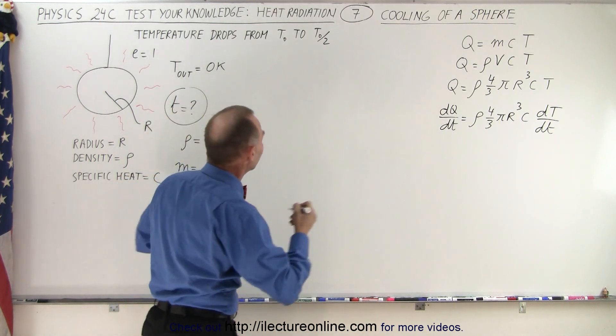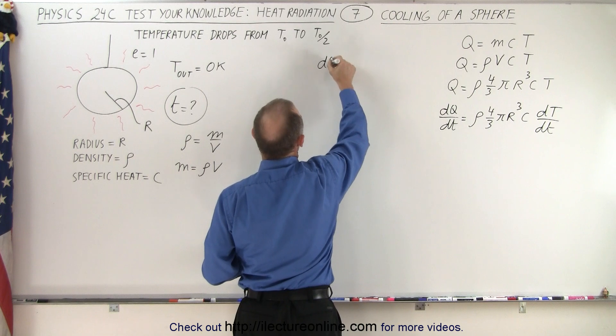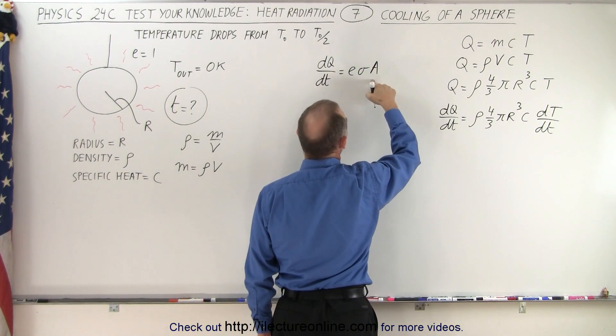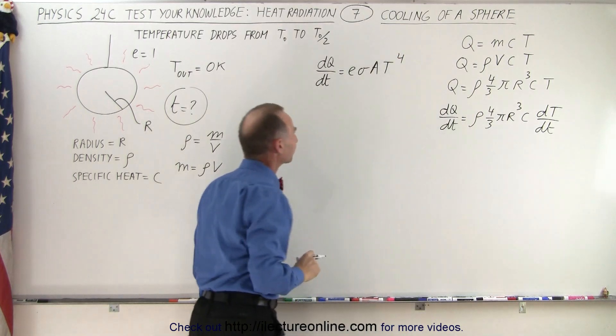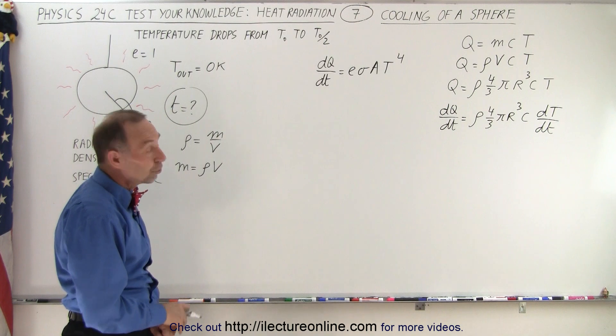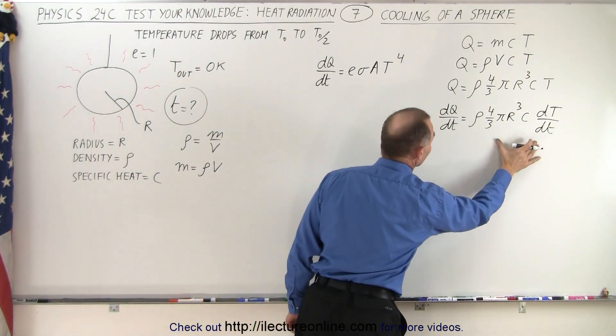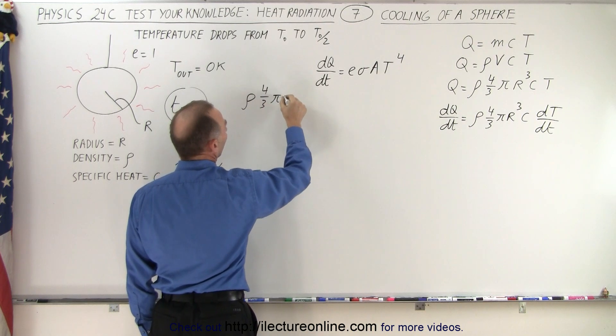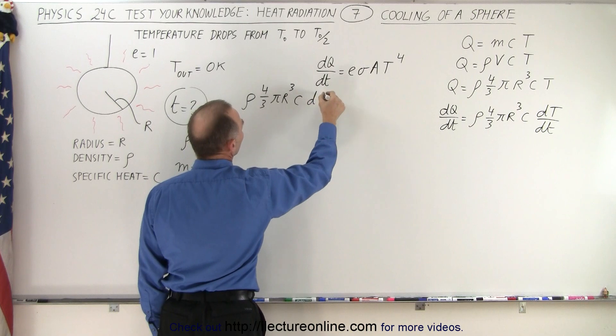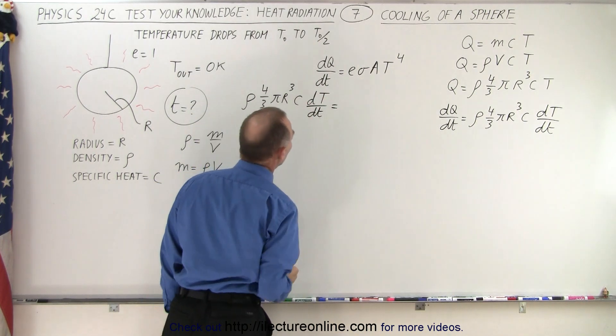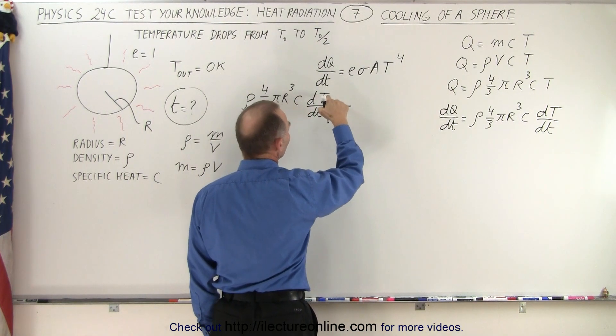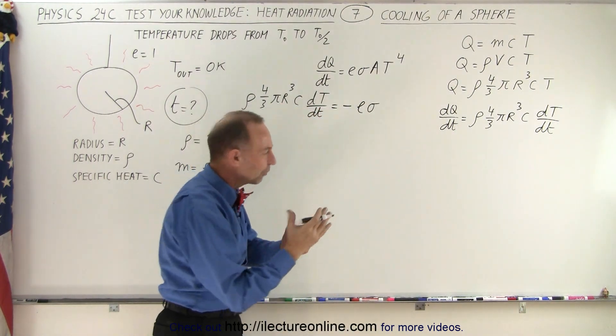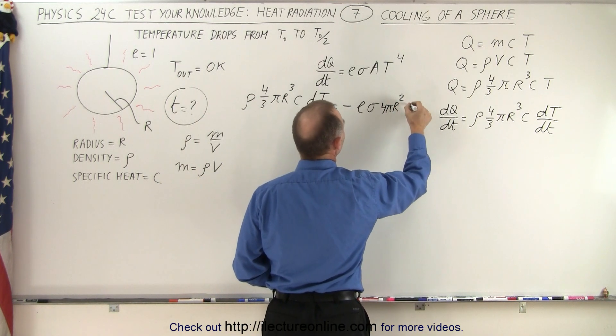Then I want to use Stefan-Boltzmann's law. I can say that dQ/dt equals the emissivity ε times σ times the surface area of the object times temperature to the fourth power. So what I could do is take dQ/dt and replace it by this. So we have ρ times 4/3 times πR³ times C times dT/dt equals, and this is going to need to be a negative quantity, so it's going to be -εσ times the area, that would be the surface area of the sphere, 4πR² times T⁴. Let's put a line in here so we don't get confused.